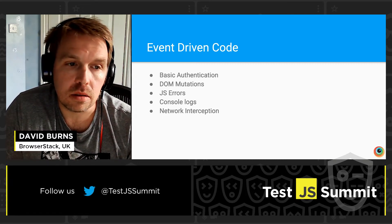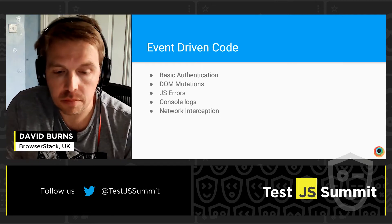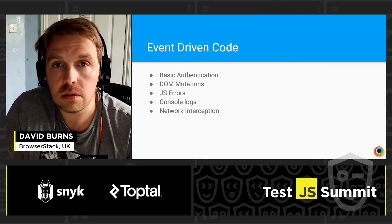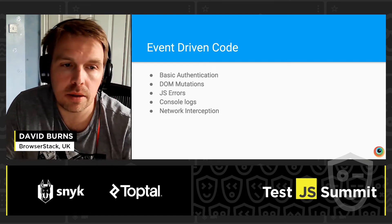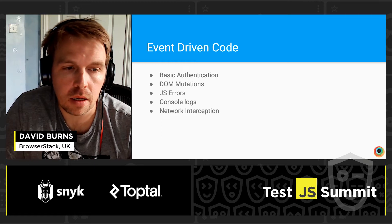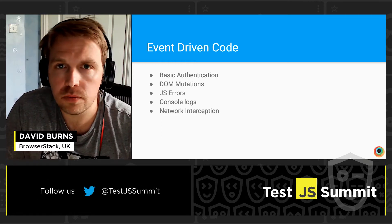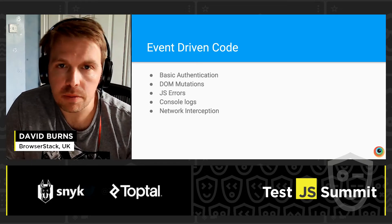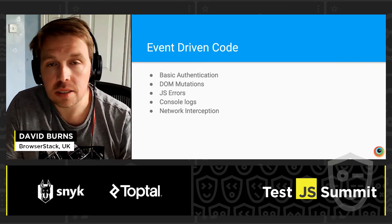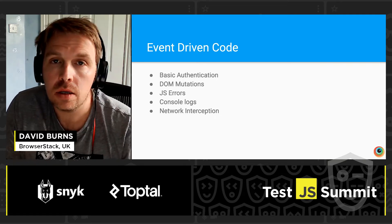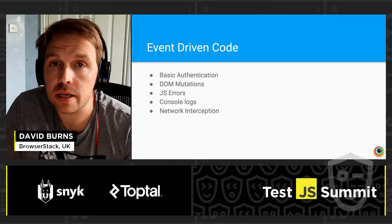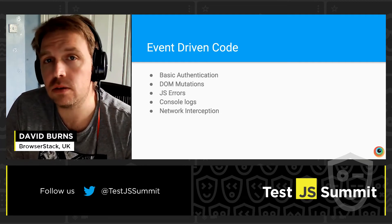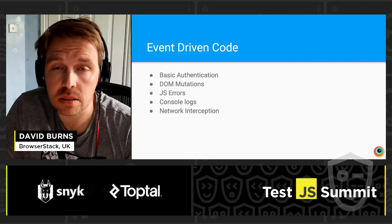We've added the ability to get around basic authentication — so whenever you have a website with basic authentication, we'll handle the URL and allow you through. In the past, if people wanted to wait for a certain element to have a mutation on the DOM, they would have to poll the driver repeatedly asking if it had changed. Now with the new APIs, you can set up a mutation listener, and when it mutates, it sends a message back to your tests so you can carry on straight away — making your tests a little bit less flaky.